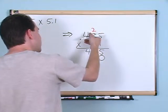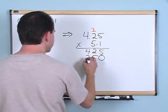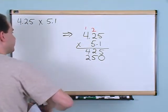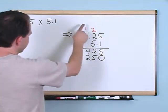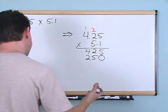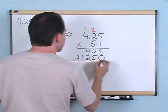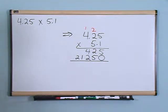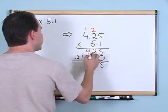5 times 5 is 25 — that's too big to write down so I put a 5 and carry the 2 up to the top of the next column. Then 5 times 2 is 10, plus the carried 2 gives 12 — so I put a 2 and carry the 1. And 5 times 4 is 20, plus the carried 1 gives 21.